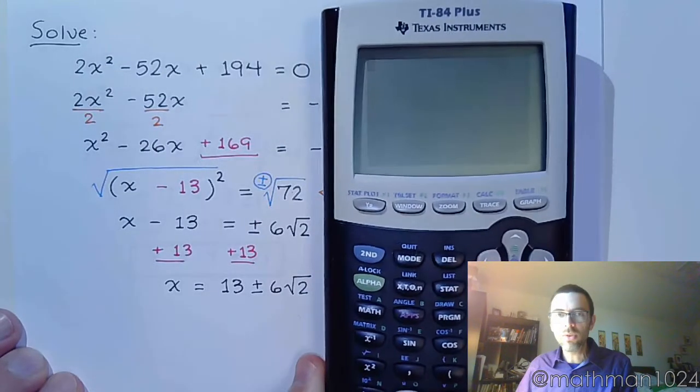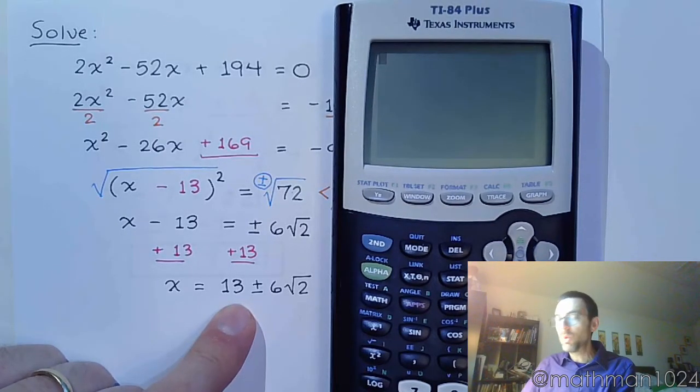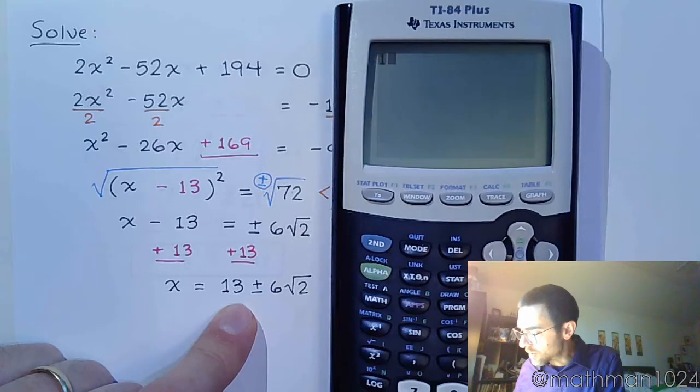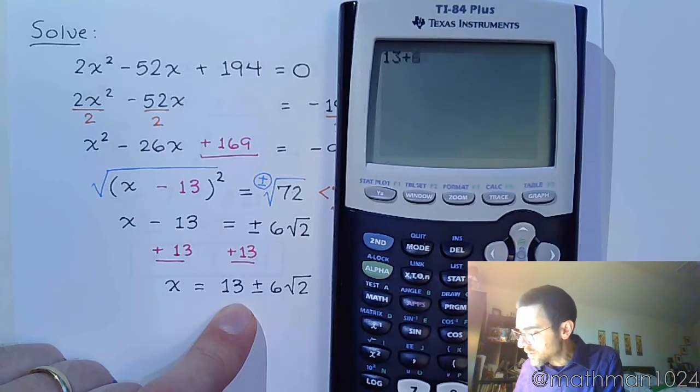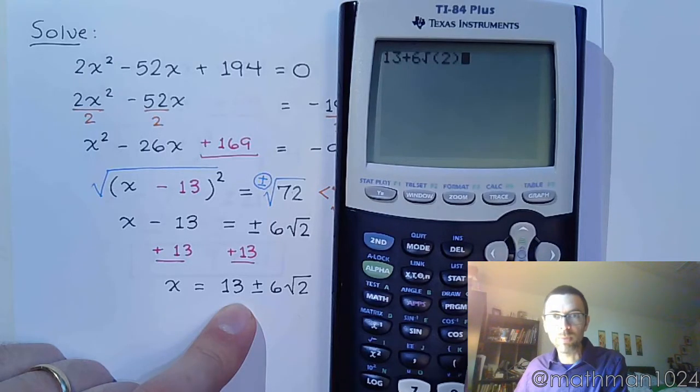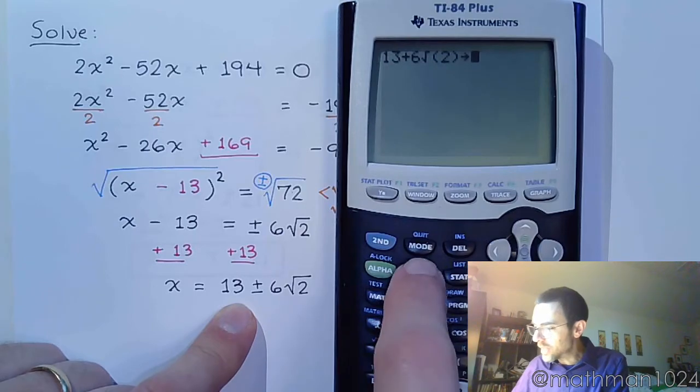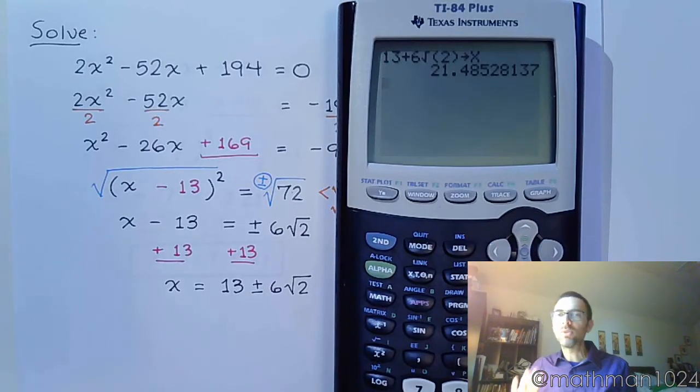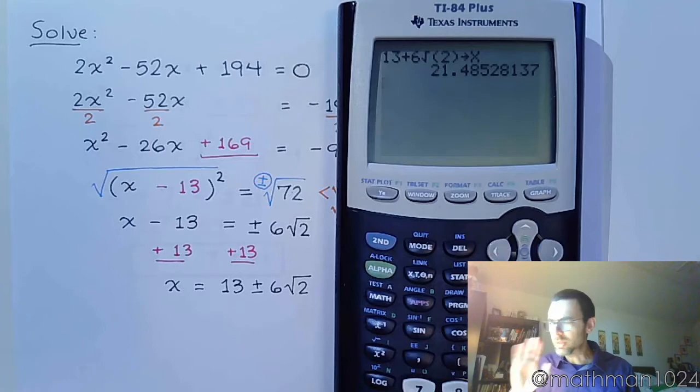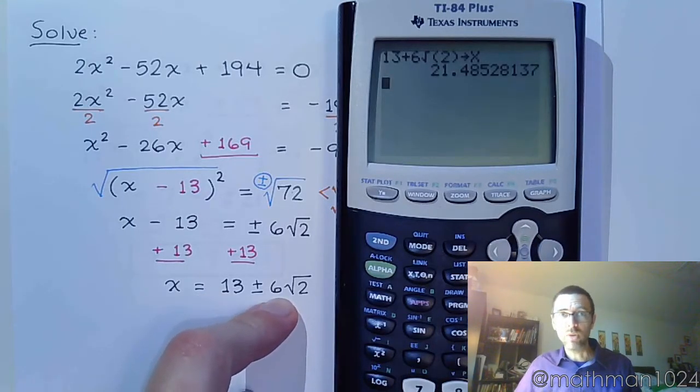So, on the graphing calculator, let's type in our answer. Now, we can't do plus or minus. We can at least do one of these. Let's take 13 plus 6 times the square root of 2. I've got to close off my parentheses. And let's use that store key that we've talked about. So, let's store this into x. So, it's some crazy decimal. Please, please, please don't try to give me that as an answer. I'm going for exact answers and this is what I want. If you type your answer in mymathlab, they want an exact answer.